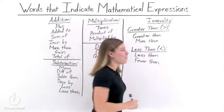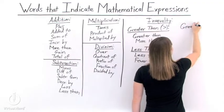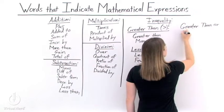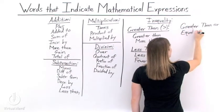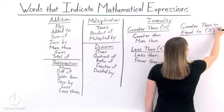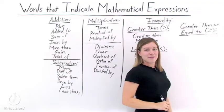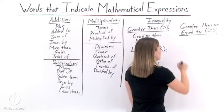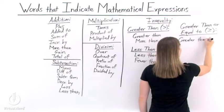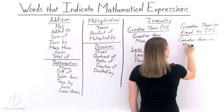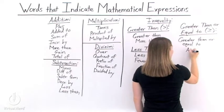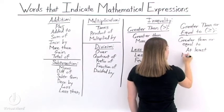Now there are two more inequalities we need to look at. The first is greater than or equal to, which is very similar to greater than except that it has an equal-to line underneath the greater than symbol. Phrases that mean greater than or equal to include 'greater than or equal to,' 'at least,' and 'no less than.'